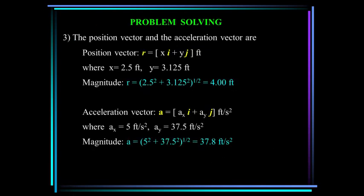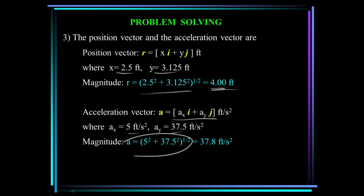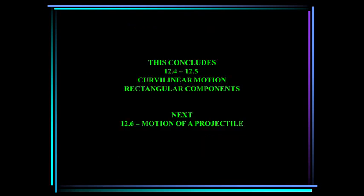The position vector is xi plus yj, where x equals 2.5 and y equals 3.125. Its magnitude, the square root of the sum of the squares, is 4 feet. The acceleration vector has a_x equals 5 and a_y equals 37.5 feet per second squared, giving a magnitude of 37.8 feet per second squared. This concludes the lecture. Next up is section 12.6, Motion of a Projectile.